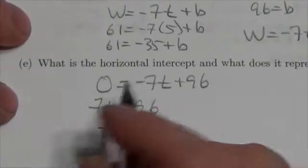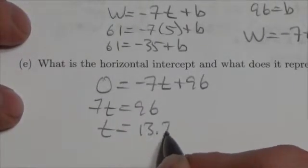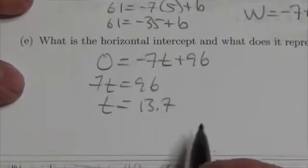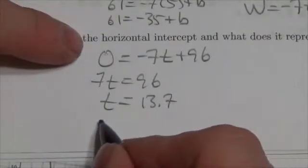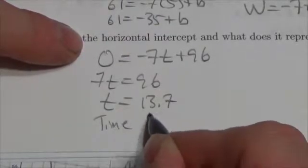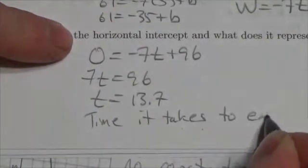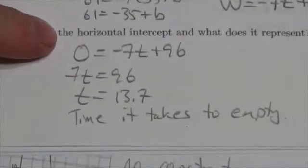And in a case like this it probably makes sense to take it to the nearest tenth here, and I get 13.7 when I go 96 divided by 7. And what this means is this is the time it takes for the water level to drop to zero.